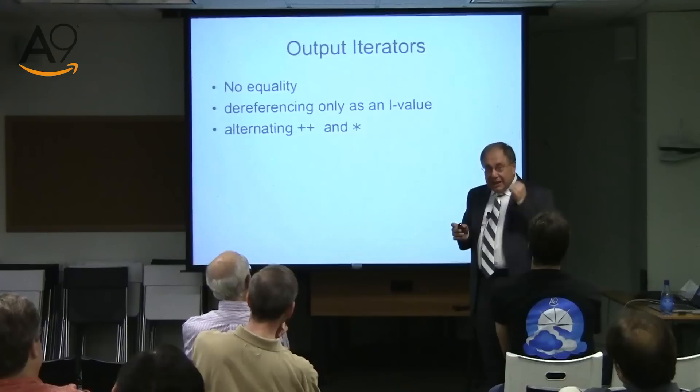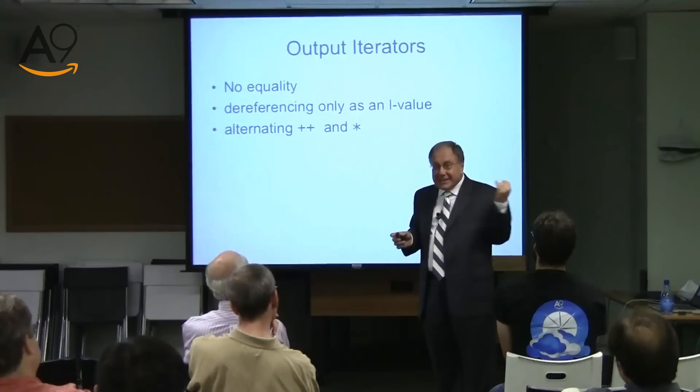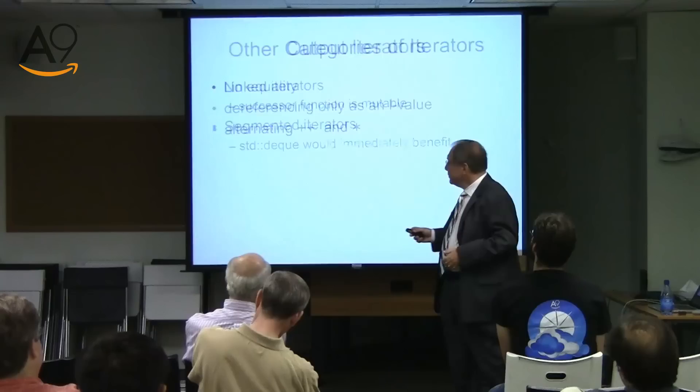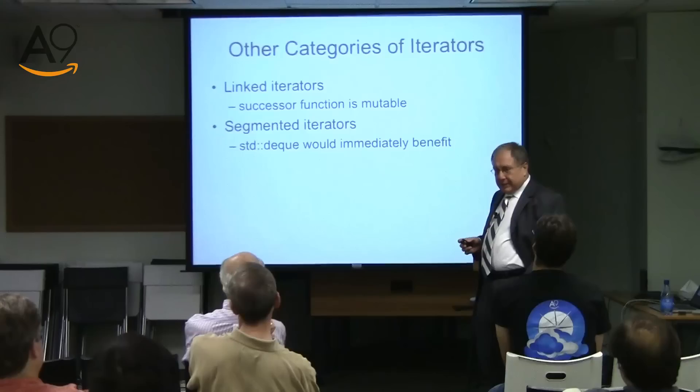Output iterators cannot be dereferenced — you cannot read from them. If you have an output pipe, you couldn't get stuff out of it; it's just not accessible. And obviously there is no way to compare equality of values because you couldn't even get values.